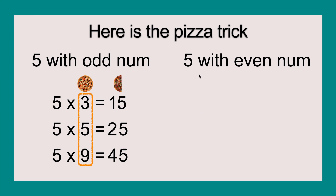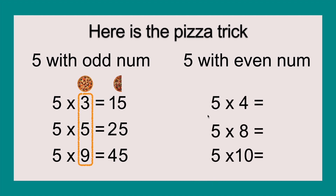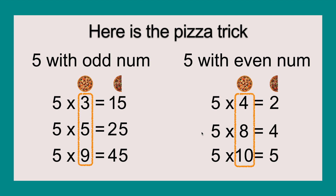Now how do we do it with an even number? Again I have listed three facts here. The facts are five times four, five times eight, and five times ten. First we circle that column again and put the pizza, then a half pizza. Then we write the halves of these numbers and put them in the tens place, and then we add zeros behind them. And then we have our answers: five times four equals twenty, five times eight equals forty, five times ten equals fifty.